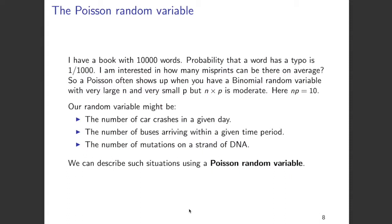Let's get to the topic of this video: the Poisson random variable. Assume that you have a book with 10,000 words and the probability that a word has a typo is 1 over 1000. You can model this as a binomial random variable where n is 10,000 and p is 1 over 1000. That is correct, but you can also model this as a Poisson random variable because n is very large and p is very small, but their product n times p is moderate — here np equals 10. This is an ideal scenario for using the Poisson random variable.